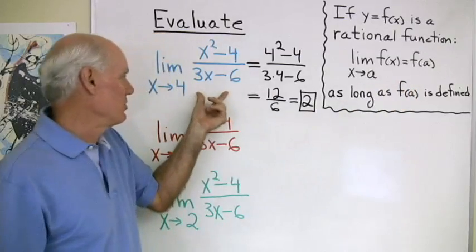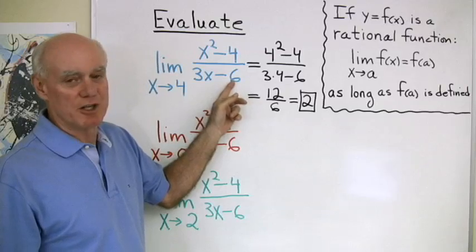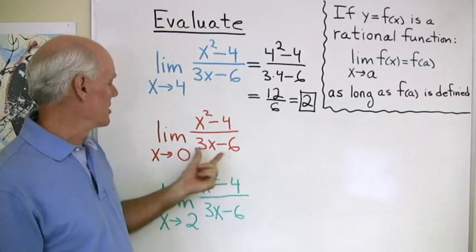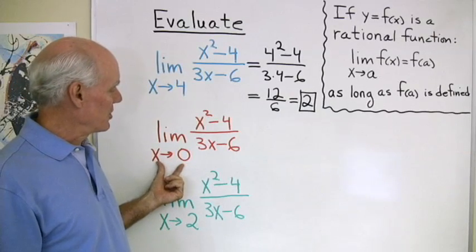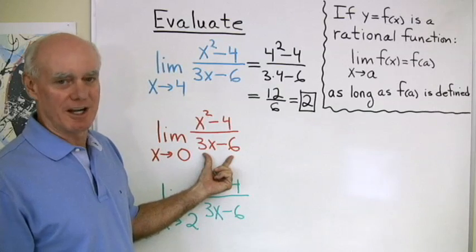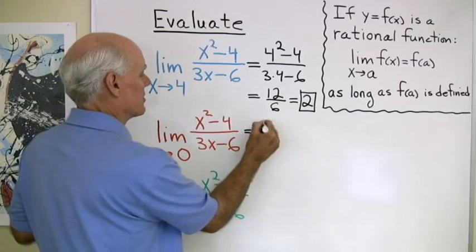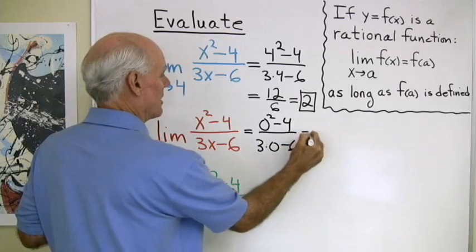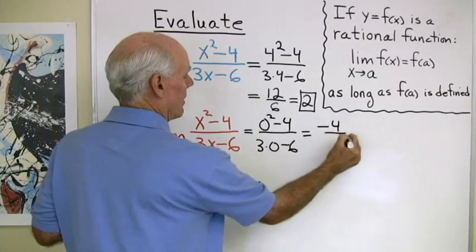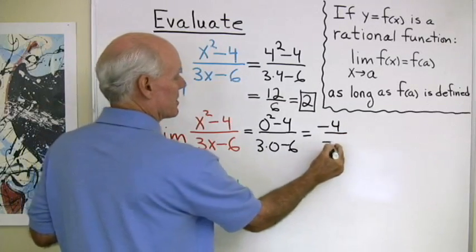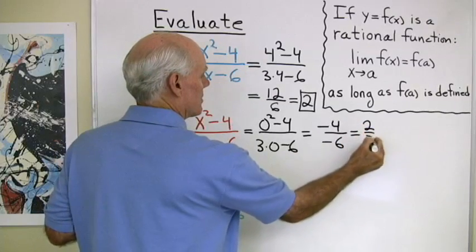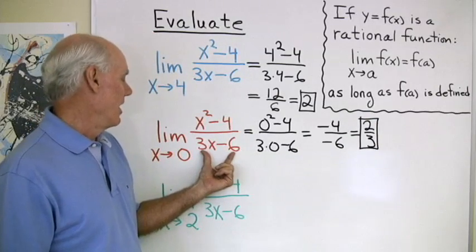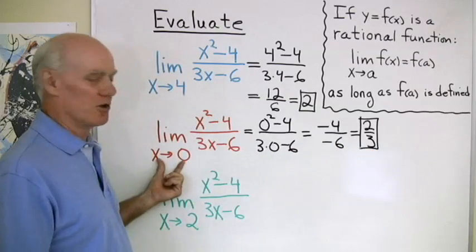This theorem tells us we can use substitution as long as the rational expression is defined for that value of x. Here's the same expression — let's see what happens as x goes to 0. The expression is defined at x = 0, so I can use substitution: (0² - 4) / (3·0 - 6) = -4 / -6 = 2/3. So this expression goes towards 2/3 as x goes towards 0.